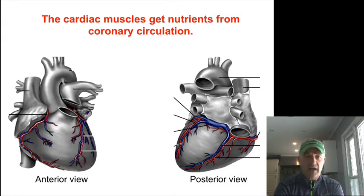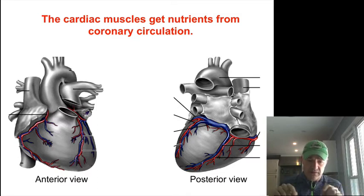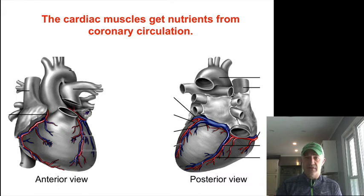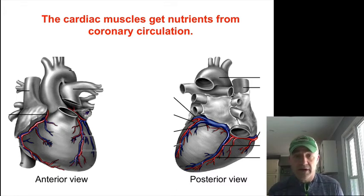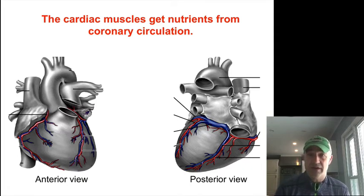If we were to look at the aorta, right behind the aortic valve, there are actually two little holes, one on each side, and those become what are going to be your left and right coronary arteries. Really the shortest trip on the systemic circuit is actually going to be this coronary circulation.